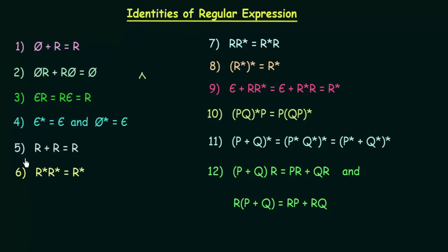The fifth identity is very simple. The union of two identical regular expressions is the regular expression itself: r + r = r.